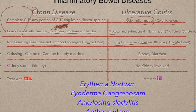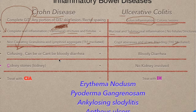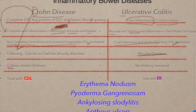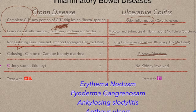Crohn's disease is confusing — it can or cannot present with bloody diarrhea. Ulcerative colitis is not confusing — it always presents with bloody diarrhea. Additionally, Crohn's disease involves the kidney, while ulcerative colitis does not involve the kidney.